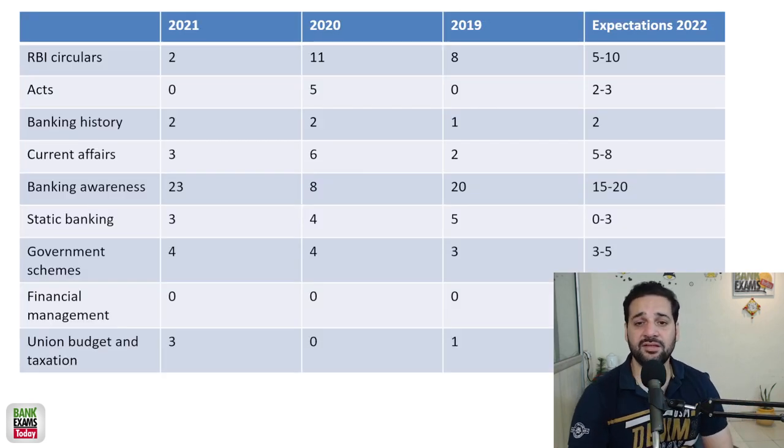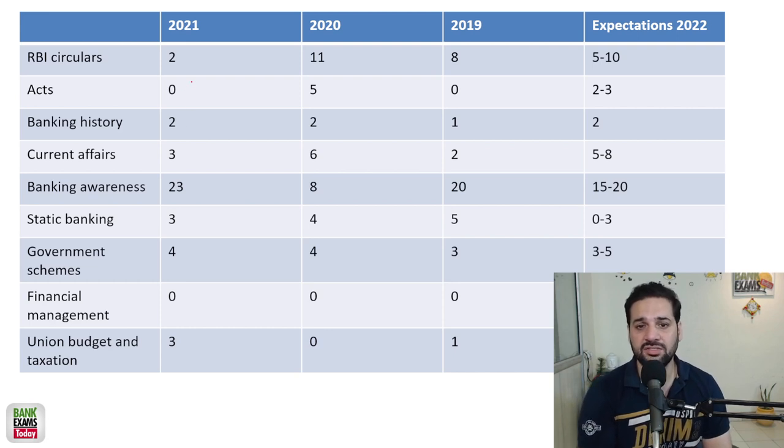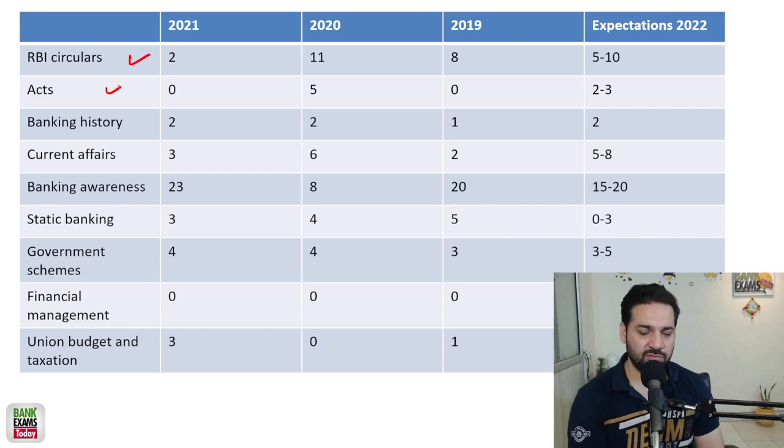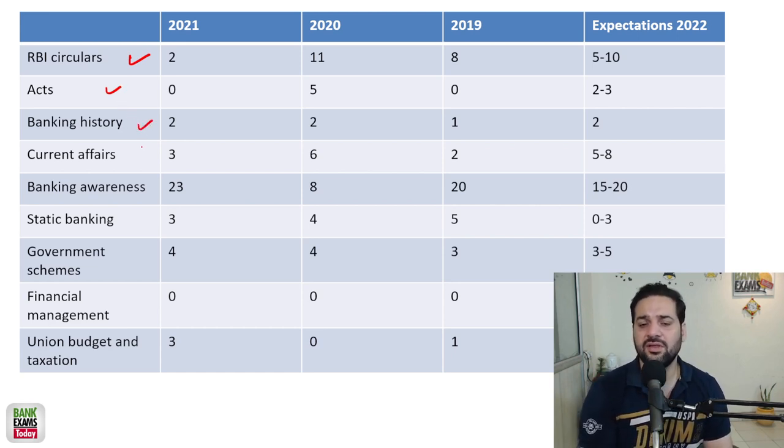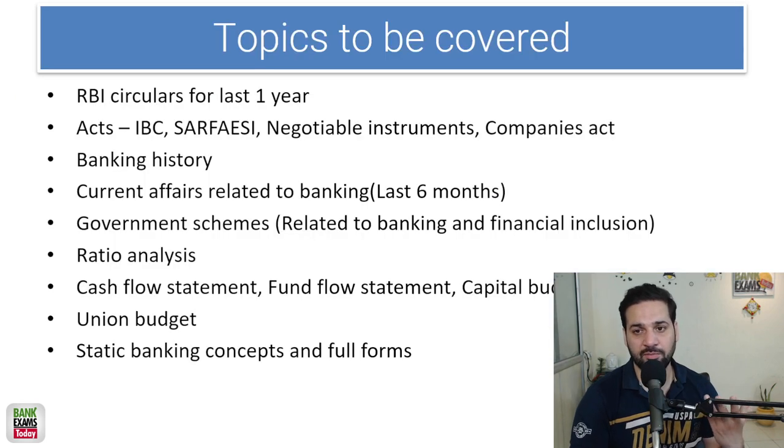Financial awareness. Financial awareness ka trend: RBI circulars mein 5-7 questions. There are acts like IBC, negotiable instrument, Companies Act. Banking history is there, current affairs is there, banking awareness, static banking, government schemes. FMA se zyada questions aate hain, union budget mein se ek question aate hain. Ye basic pattern, based upon the trend aase questions aapko dekhne ko milenge.